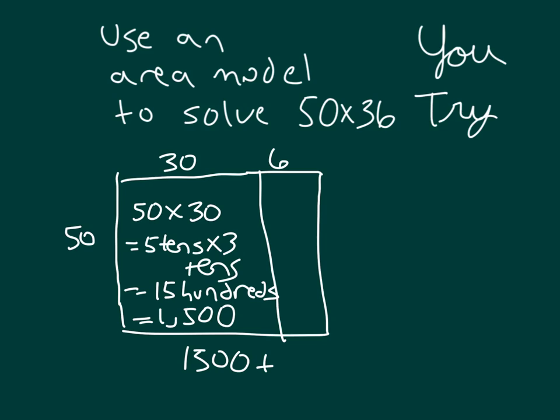The other one is 50 times 6, which is 5 tens times 6, which equals 30 tens, which equals 300. So we're adding 1,500 to 300.